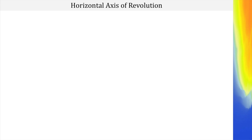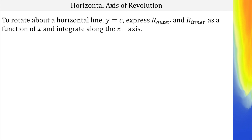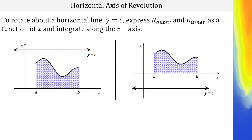Let's start with a horizontal axis of revolution. To rotate about a horizontal line y equals c, we need to find an outer radius and an inner radius as a function of x and integrate along the x-axis. As you can see, we have this line y equals c way up above the area that we're going to be revolving — and that is our axis of revolution. Like the washer method, we're going to have a big R and then a smaller radius where the hole is created.